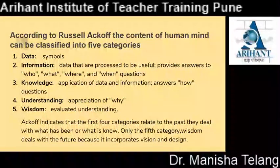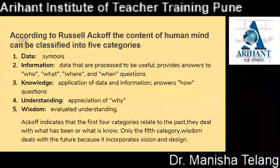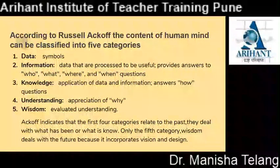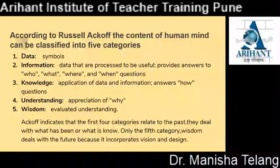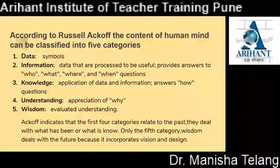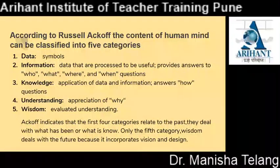According to Ackoff, the content of the human mind can be classified into five categories. Data means symbols. Information means data that are processed to be useful — provides answers to who, what, where and when questions. Knowledge is the application of data and information — answers 'how' questions. Understanding is the appreciation of 'why.' Wisdom is evaluated understanding. Ackoff indicates that the first four categories relate to the past — they deal with what has been or what is known. Only the fifth category, wisdom, deals with the future because it incorporates vision.